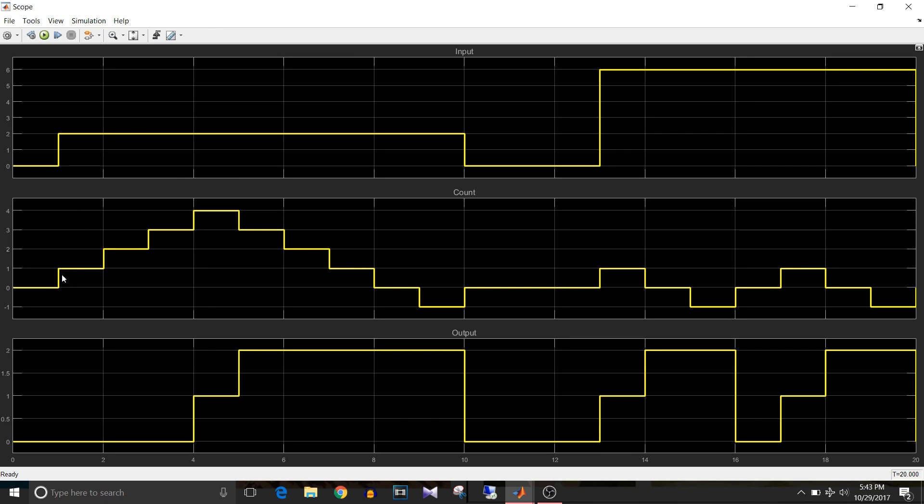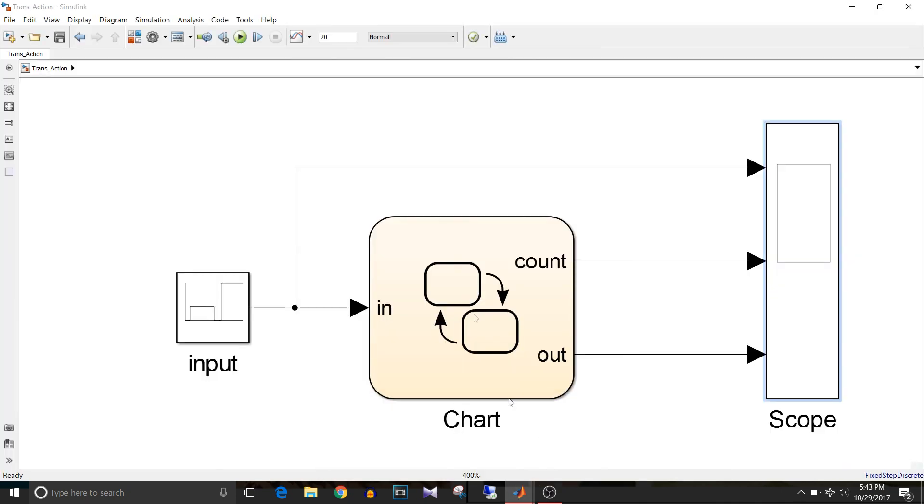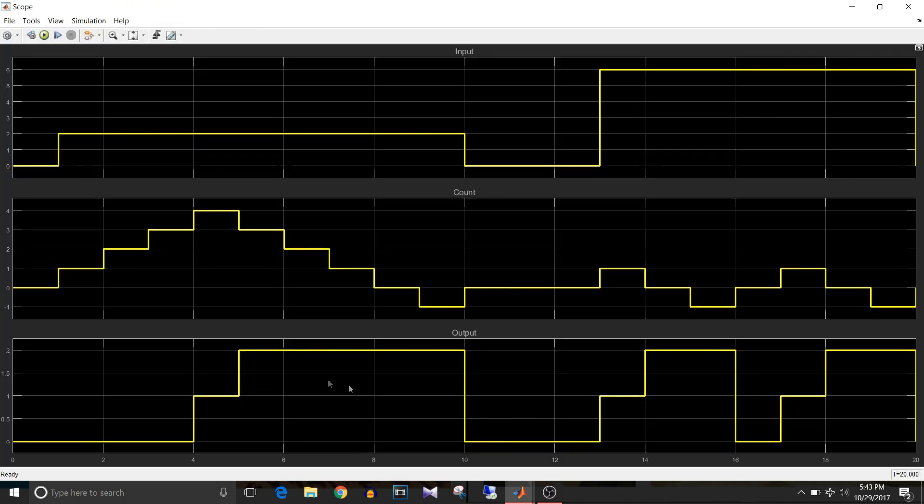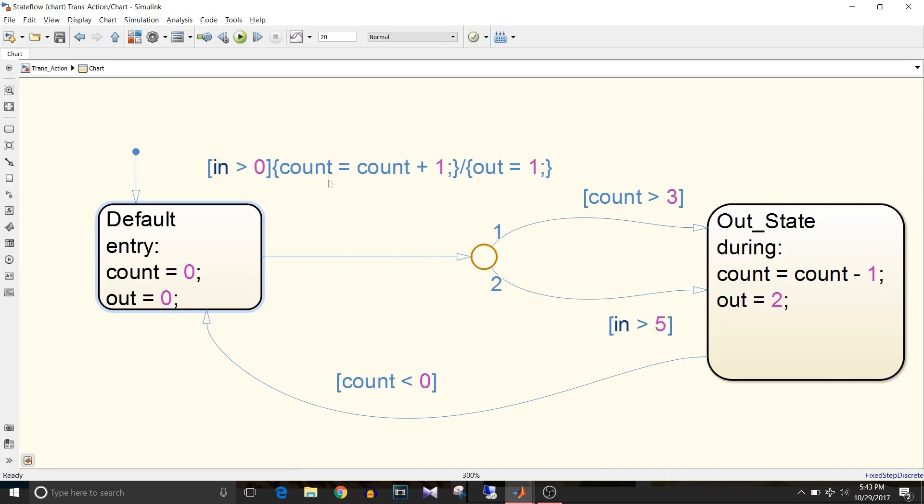it is 2. So it starts to count up, that is count is equal to count plus 1. If we try to map this with the model, you can see input is greater than 0.